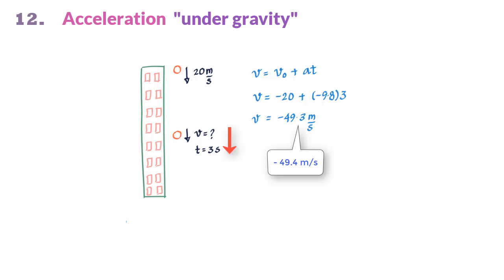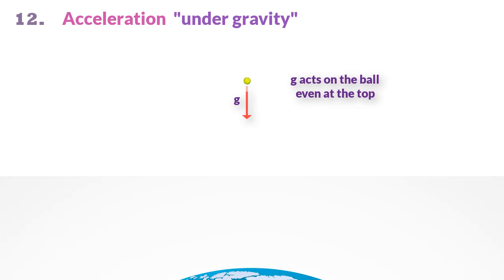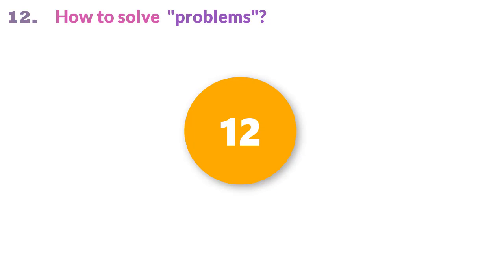When dealing with objects under gravity, the sign of g is always negative. A common mistake is thinking the acceleration at the top of the flight is zero because the velocity is zero. If that were true, g would be zero and the ball would hang in mid-air. In reality, the force of gravity acts on the ball even at the top where it momentarily stops, and it is precisely this acceleration that increases the ball's velocity as it falls back down.